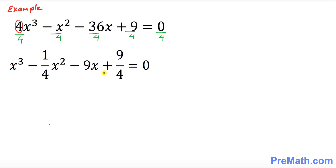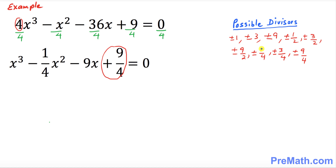Now let's focus our attention on the last number on the right-hand side: positive 9 over 4. We are looking for the possible divisors — the factors of this number. Here are the possible divisors we came up with.